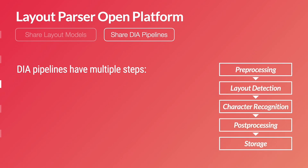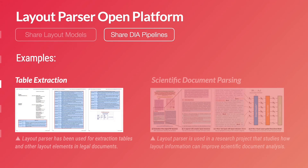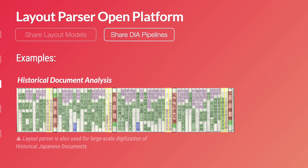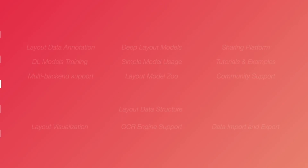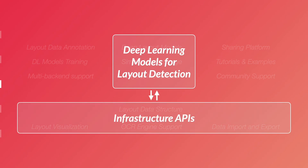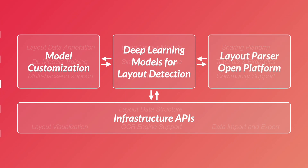Layout Parser also enables DIA pipeline sharing. Here are some examples where Layout Parser helps with parsing tables in legal documents, extracting information from scientific papers, or digitizing historical Japanese documents at scale. To summarize the key components: there is a deep learning model for layout detection, infrastructure APIs that simplify post-processing, support for customizing different models, and an open platform for sharing both models and pipelines.